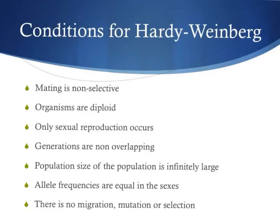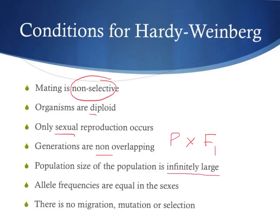So now that we've walked through all seven requirements, let's run through those one more time. Mating has to be non-selective; organisms are diploid because alleles occur on homologous chromosomes; only sexual reproduction occurs, not asexual; generations are non-overlapping so parent generations are not mating with F1 or F2 offspring; the population size is infinitely large to sustain those alleles over time; allele frequencies are equal in both sexes to avoid imbalance when mating occurs; and there is no migration, no mutation, or selection for either of the alleles.